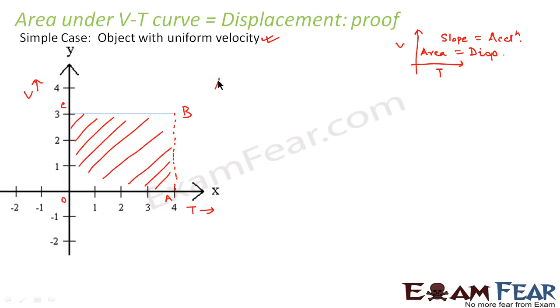Now area under the curve would be equal to area of this rectangle OABC. Now area of this rectangle will be equal to length into breadth, that is OA into OC. Now what is OA? OA would represent time and OC would represent velocity.